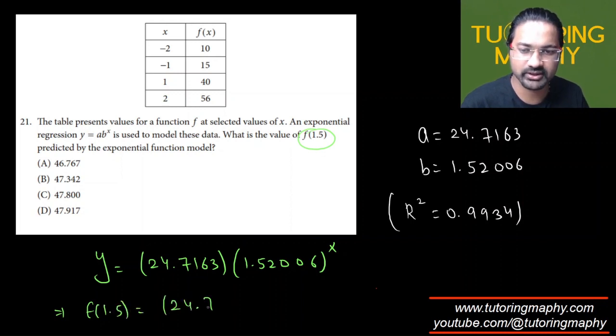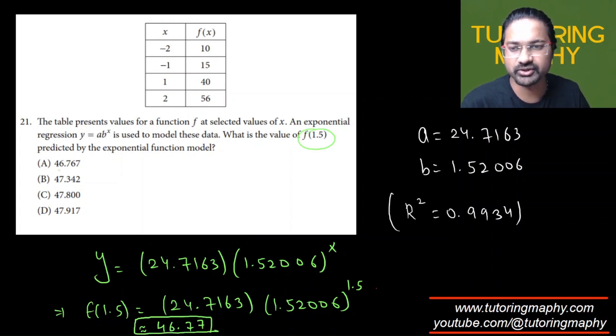This becomes 24.7163 times 1.52006 raised to 1.5. This is approximately 46.77, which is option A.